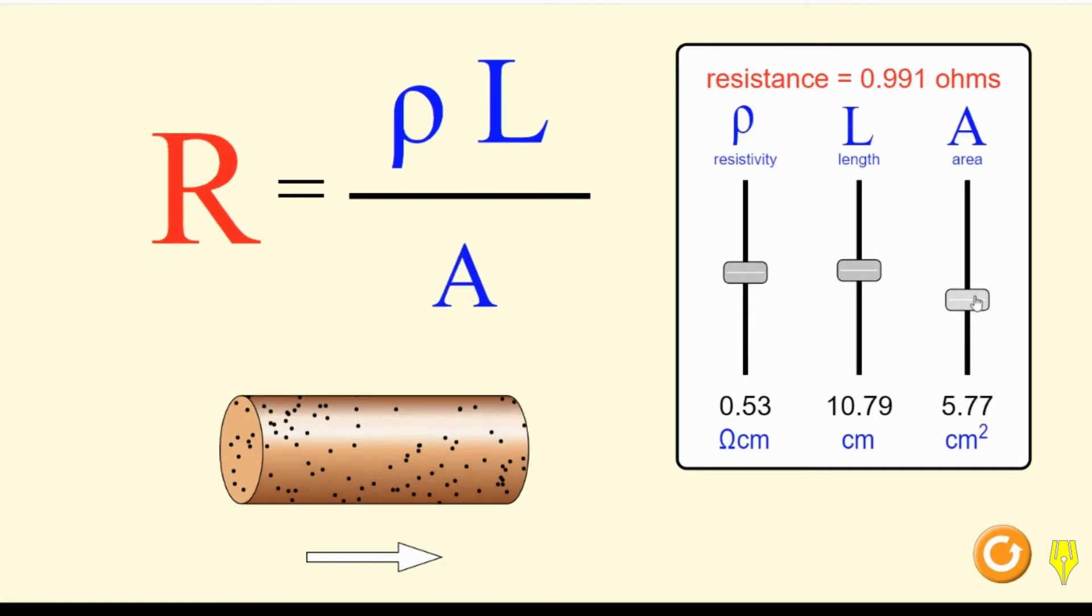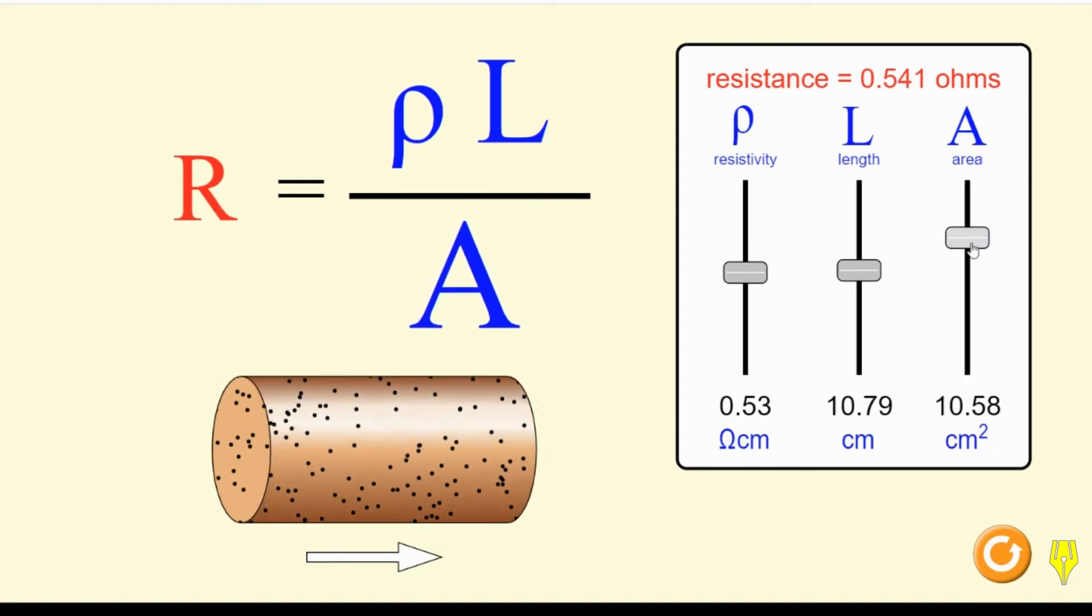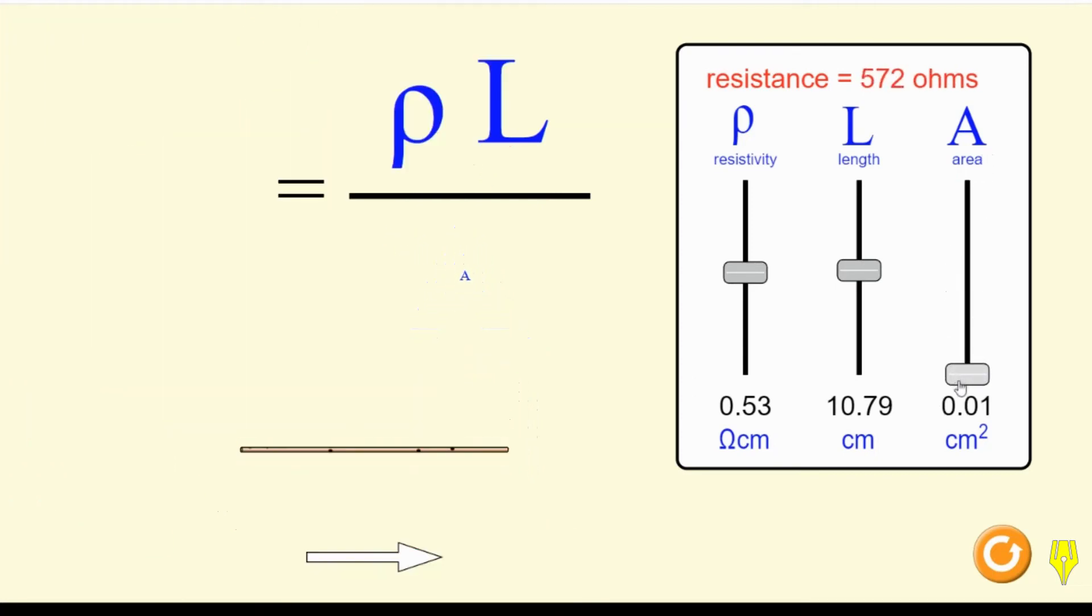Resistance is inversely proportional to the thickness or the cross-sectional area, A. Thinner the conductor, the higher is its resistance. A conductor with more cross-sectional area will have less resistance.